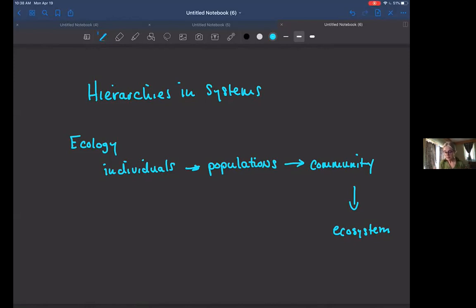From the ecosystem, we can then talk about biomes. We kind of put the ecosystems into groups. So we can talk about temperate rainforest biomes, or desert biomes.